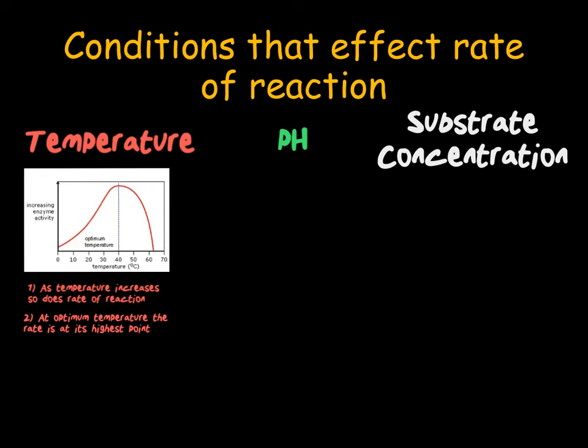After we have reached the optimum temperature, the enzyme starts to denature. This means that after the optimum temperature, the rate of reaction starts to decrease until all of the enzyme has denatured. When we talk about the optimum temperature, we mean the temperature at which the rate is at its highest possible point.